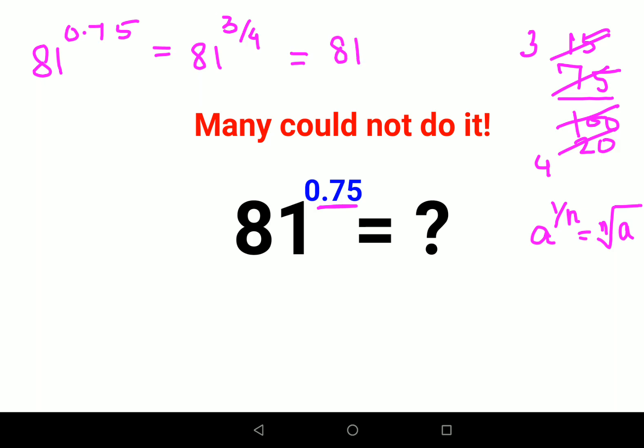We can write this as fourth root of 81 raised to 3. Now please understand, what is 81? Which is fourth root of 3 raised to 4, the whole raised to 3.